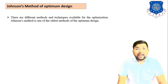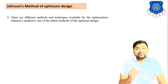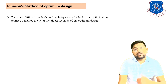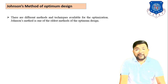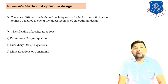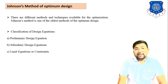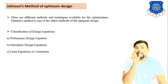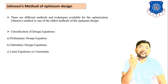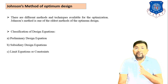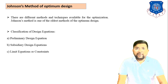There are different methods and techniques available for optimization; this is one of them. The Johnson Method is one of the oldest and most useful methods of optimum design. There is a classification of optimum design in design equations — the equation can be classified into three different types.